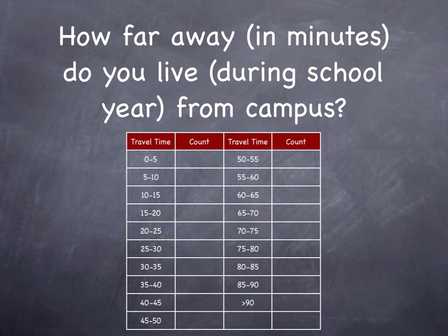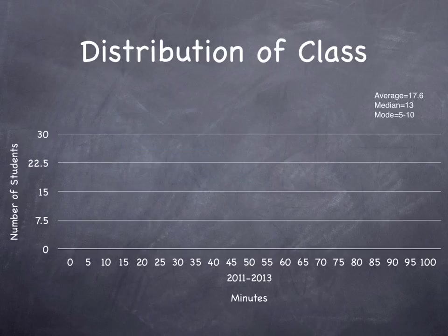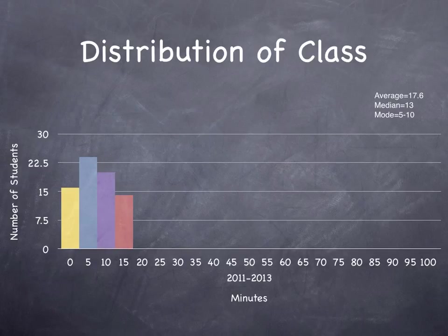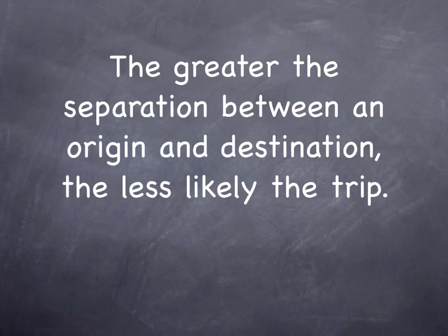How far away in minutes do you live during the school year from campus? We asked this question in previous years, and this is what the trip distribution looks like. The statistical mode is 5 to 10 minutes. The average is between 15 and 20 minutes. There's a long tail; the statistical median is between 10 and 15. The greater the separation between two places, the less likely the trip — nobody was more than 60 minutes away, nobody was two hours away, nobody's commuting from Chicago, Los Angeles, or Shanghai.